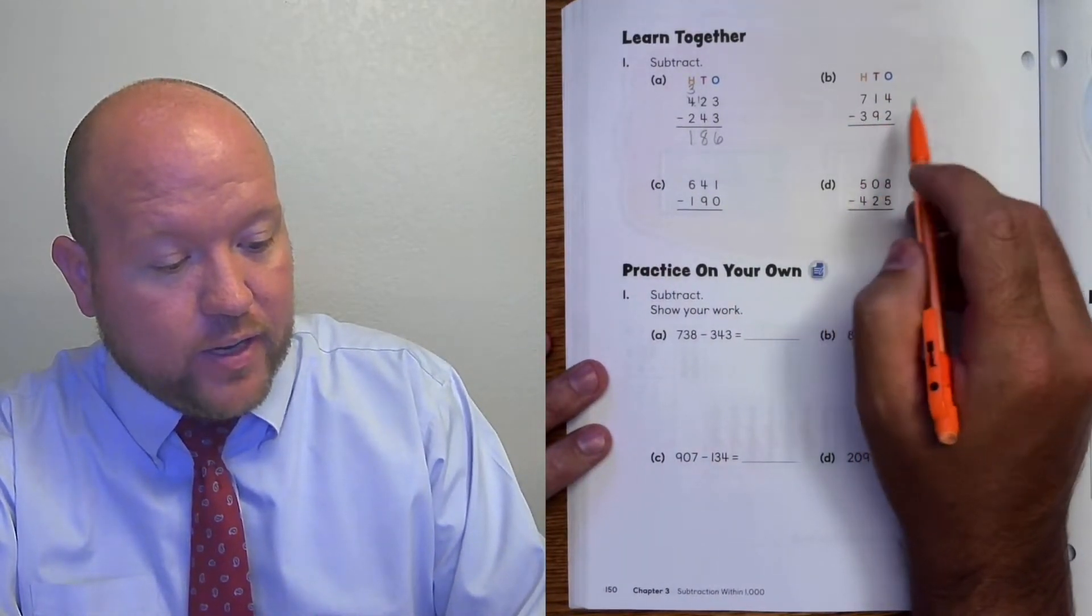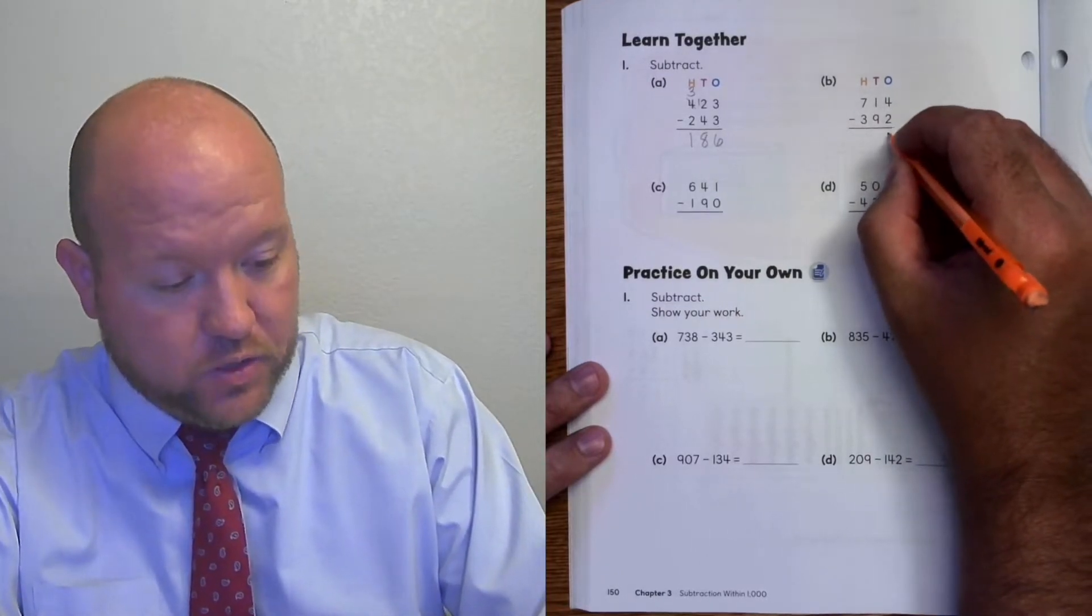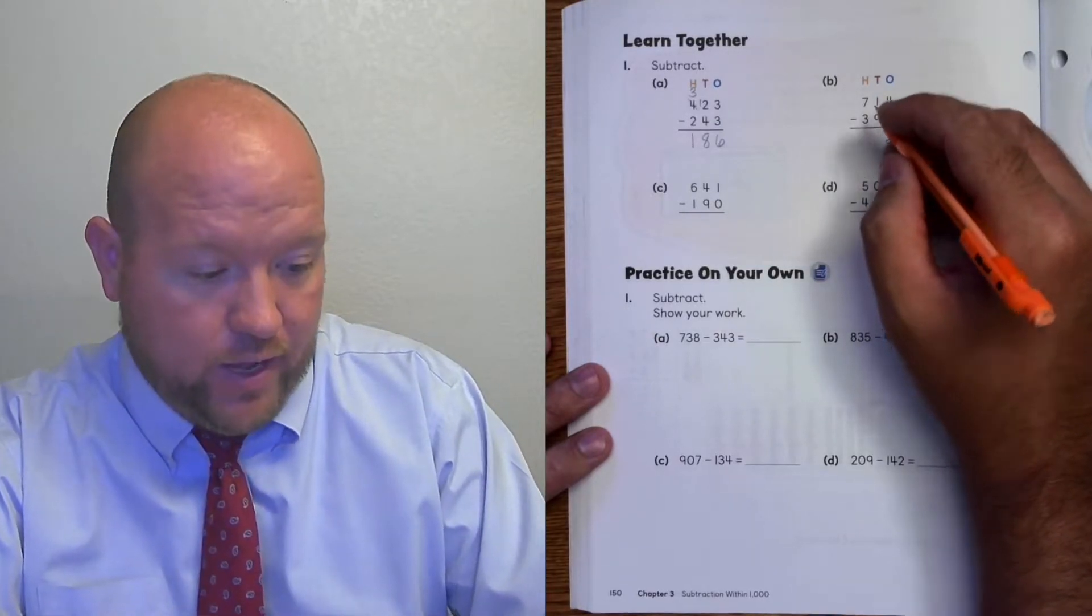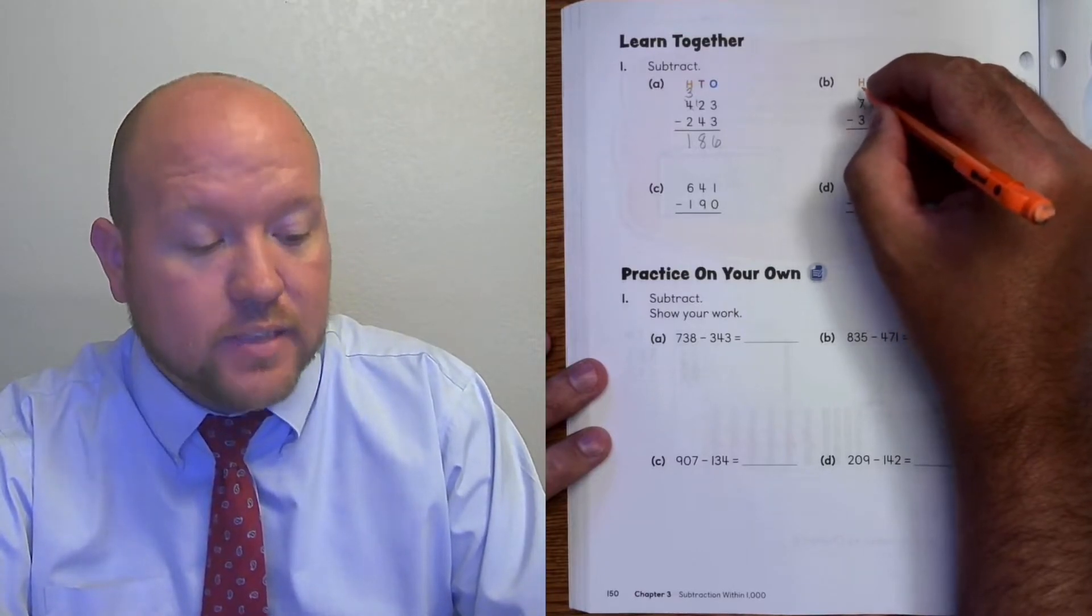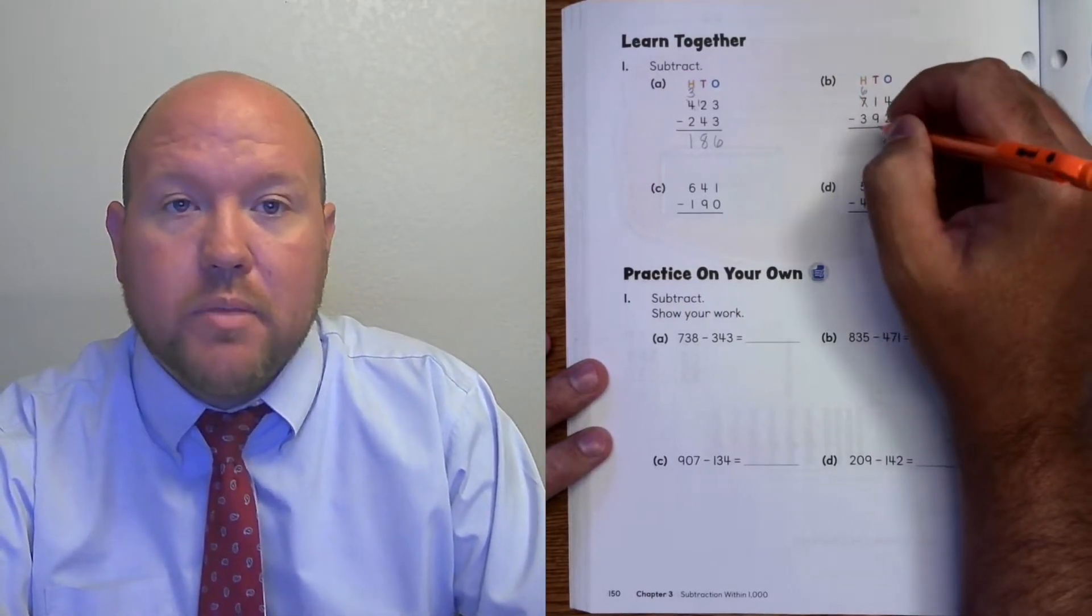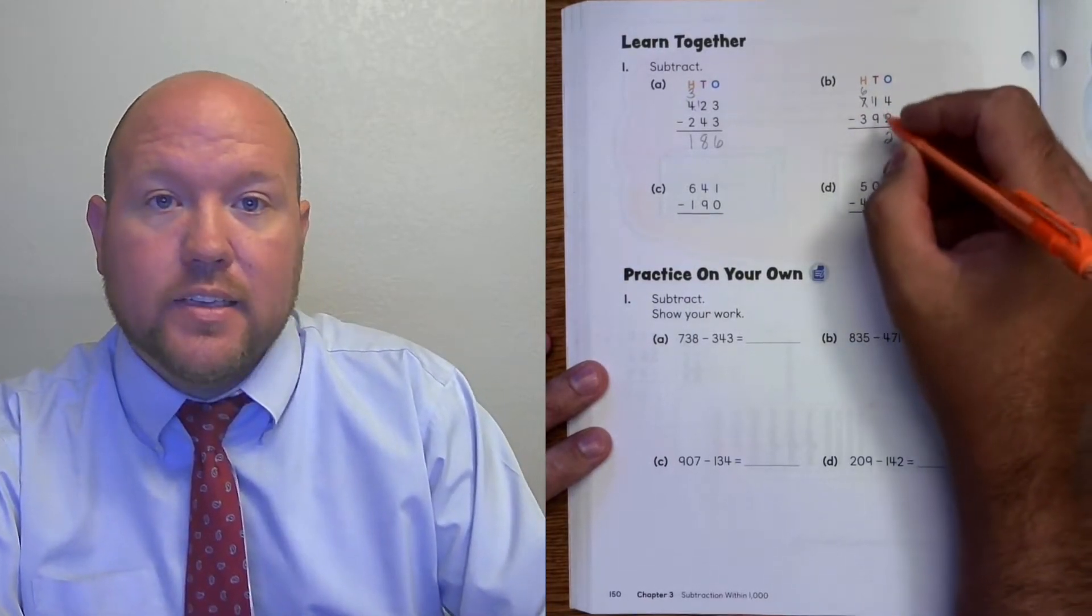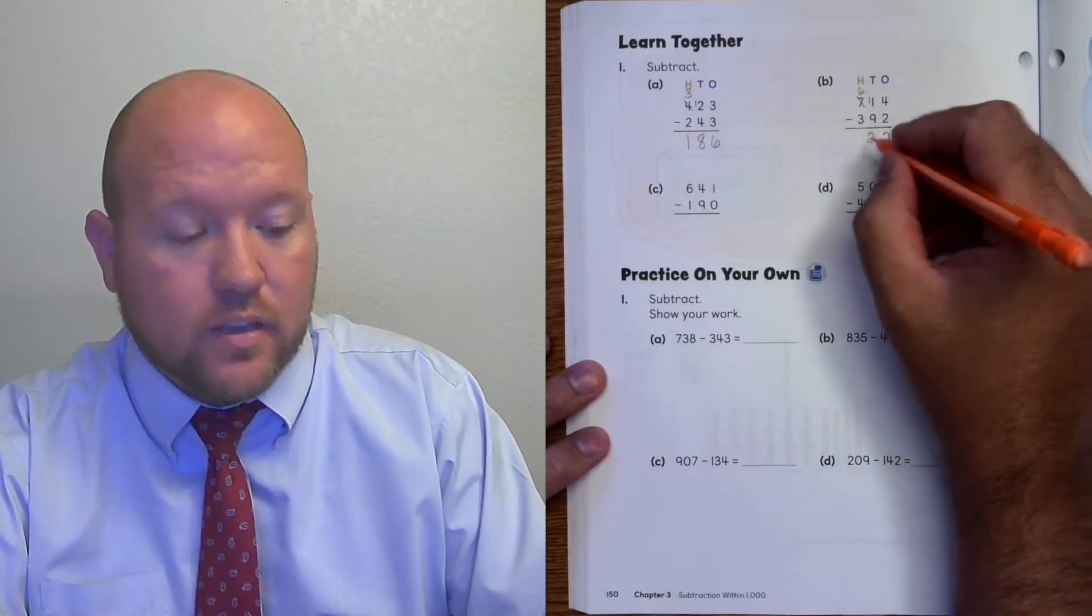714 minus 392. 4 minus 2 is 2. 1 minus 9, I need to rename. I cross out the 7 and it becomes a 6. And the 1 becomes 11. 11 minus 9 is 2. 6 minus 3 is 3. So 322.